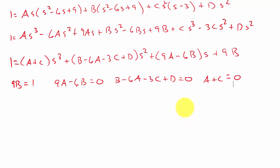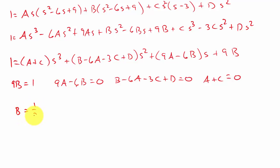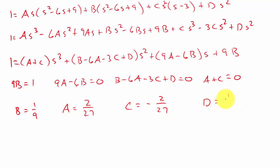From 9B = 1, B = 1/9. Plugging that into 9A minus 6B = 0 and solving gives A = 2/27. Then from A + C = 0, C = negative 2/27. Plugging A, B, and C into the s² equation gives D = 1/9. So our coefficients are: B = 1/9, A = 2/27, C = negative 2/27, D = 1/9.